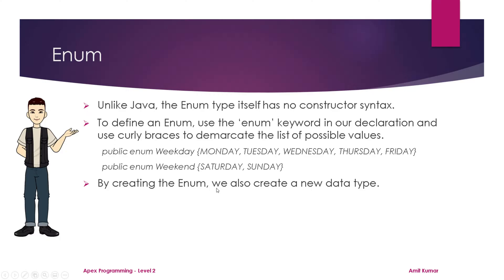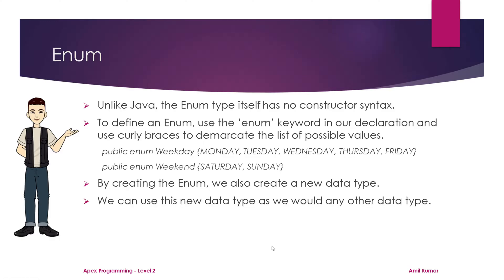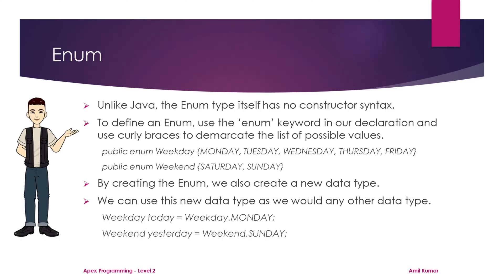As you can see, we created an Enum for weekdays where Monday, Tuesday, Wednesday, Thursday, and Friday are possible values, and a similar weekend Enum for Saturday and Sunday. By creating the Enum, we also create a new data type whose name is the name of the Enum itself — weekday and weekend. We can create a variable of it, like a 'today' variable of weekday type, and assign a value using weekday dot any possible value, such as Monday.